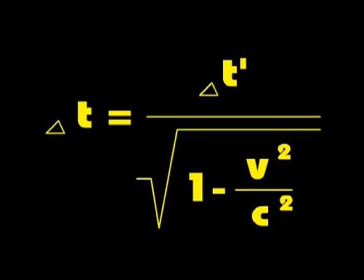Δt means the time perceived by the external observer. Δt' means the time in the system which moves. V is the velocity of the system's movement, and c means the velocity of light.